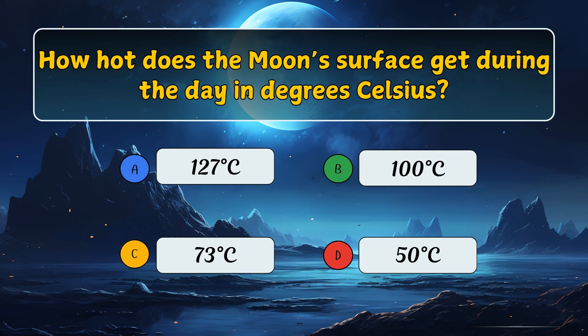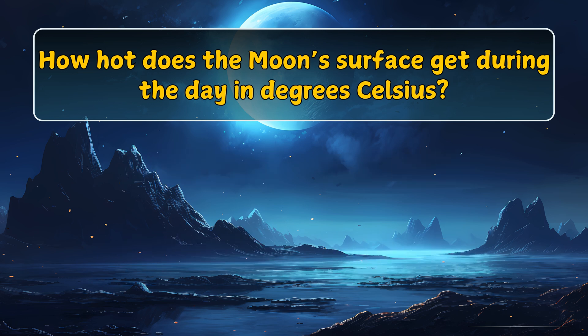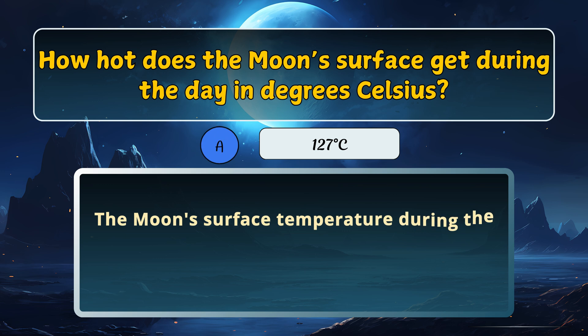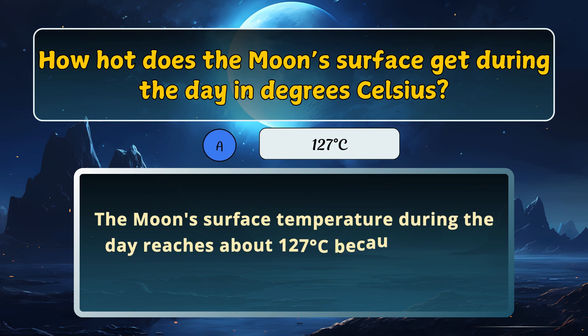How hot does the moon's surface get during the day in degrees Celsius? Here is the answer: 127 degrees Celsius.